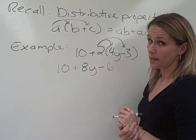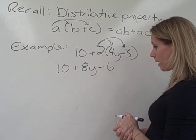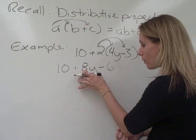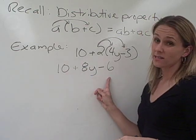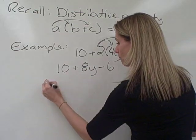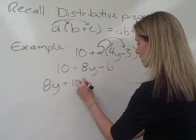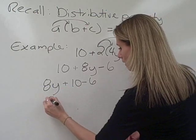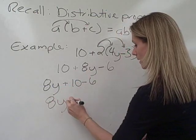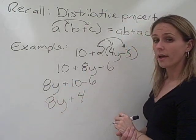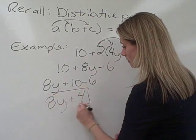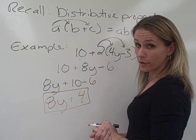We're tempted to be done, but we're not. And that's because we see that, although 8y has no like terms, 10 and minus 6 are. So, let's put our 8y here to the left. Plus 10 minus 6, we're going to end up, 10 minus 6 is 4. And now, this is all we can do, and we are done.